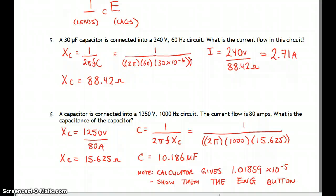Okay, next one. We've got a capacitor at 1,250 volts, 1,000 hertz. Current flow is a disgusting 80 amps. What's the capacitance of the capacitor? So first of all, we have to find Xc.